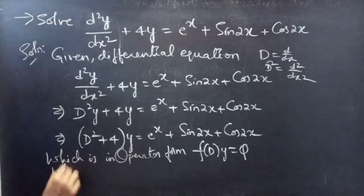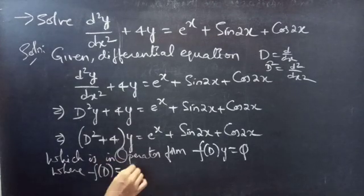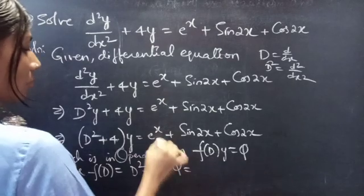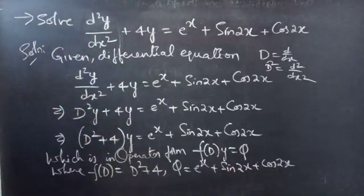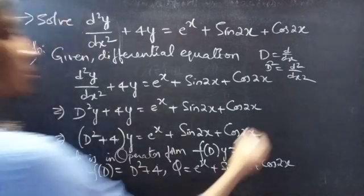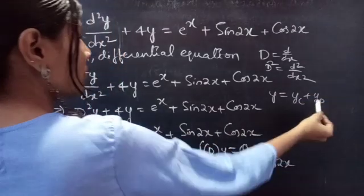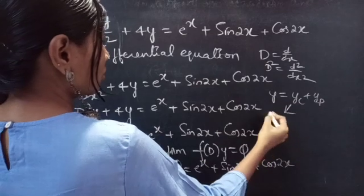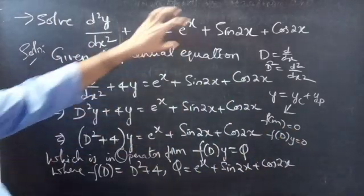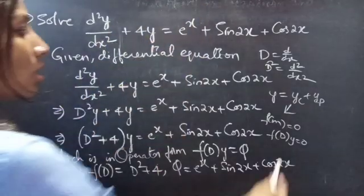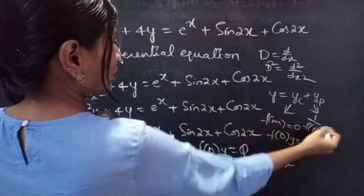By comparing, we get f(d) = d² + 4 and Q = eˣ + sin2x + cos2x. Now we need to write the general solution to the given non-homogeneous equation using y = yc + yp, where yc is the complementary function and yp is the particular integral. We find yc using the roots of the auxiliary equation of the homogeneous equation — simply by taking RHS to 0 — and yp using 1/f(d) · Q.